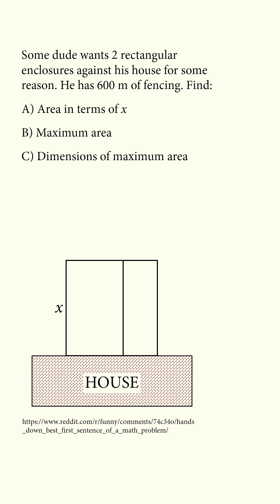They say this is hands down the best first sentence of a math problem. Some dude wants two rectangular enclosures against his house for some reason. He has 600 meters of fencing.